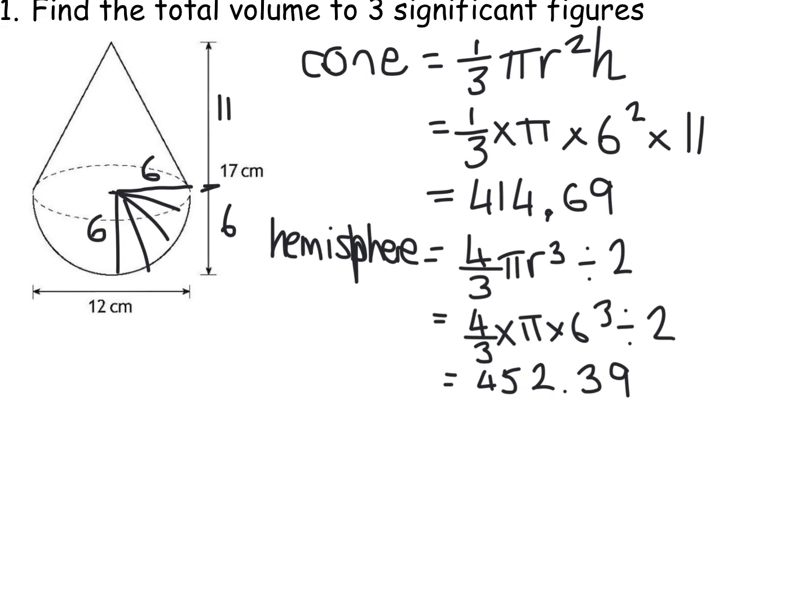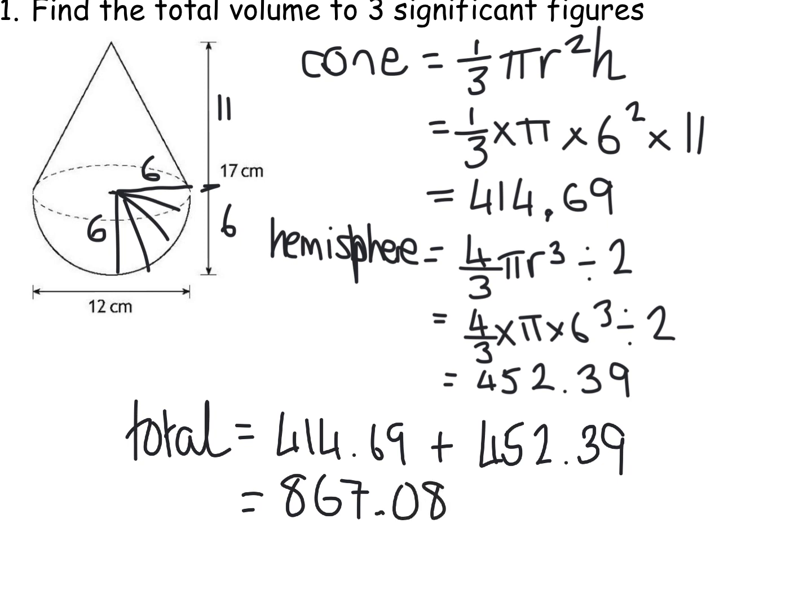And then what's left to do here is get the total volume. So the total volume is adding your two answers together. So 414.69 plus the 452.39. And it gives us 867.08. Now the question said it wanted the answer to three significant figures. So with three significant figures, I would keep the 8, the 6 and the 7. The 0 does nothing. So it's just 867 centimetres cubed. So a word of warning. I would always try and put your units in at the end of a question. There will normally be one question in the whole exam paper where you get deducted for not putting units. It can be in your simultaneous equation. It can be in your volume. So just be careful. Always put your units in.